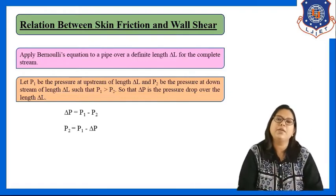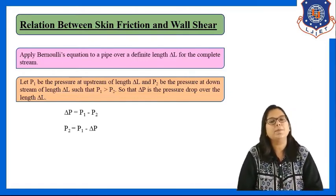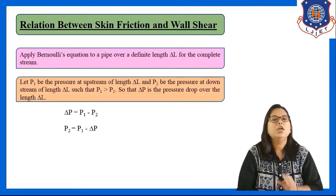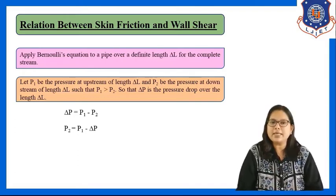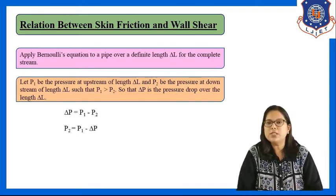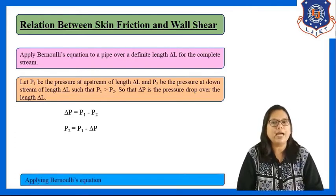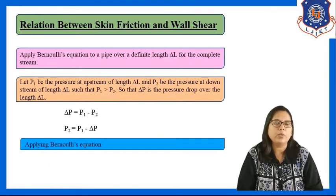Delta P equals P1 minus P2. Since P1 is greater than P2, delta P is the pressure drop over delta l, so P2 is equal to P1 minus delta P. Now we are going to apply Bernoulli's equation.